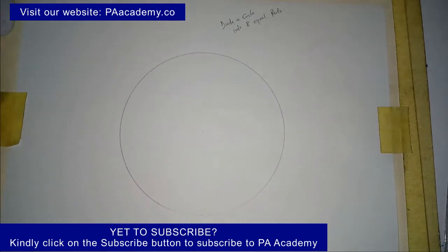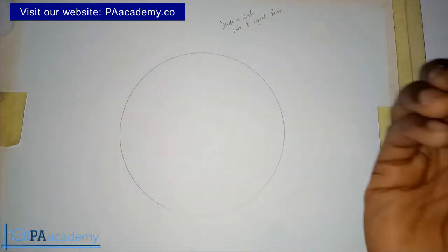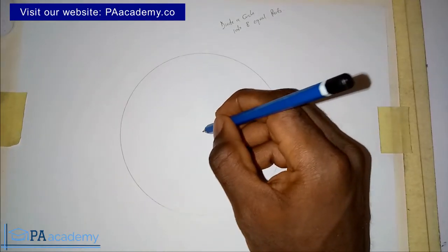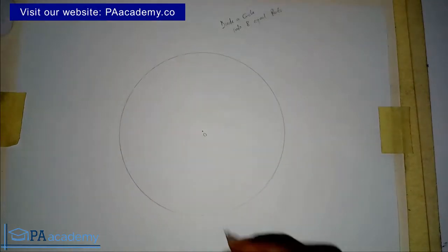Once you have your circle, note the center of the circle. For my own circle, this is the center here. Let me call it point O. This is the center, so I'm going to draw my diameter.